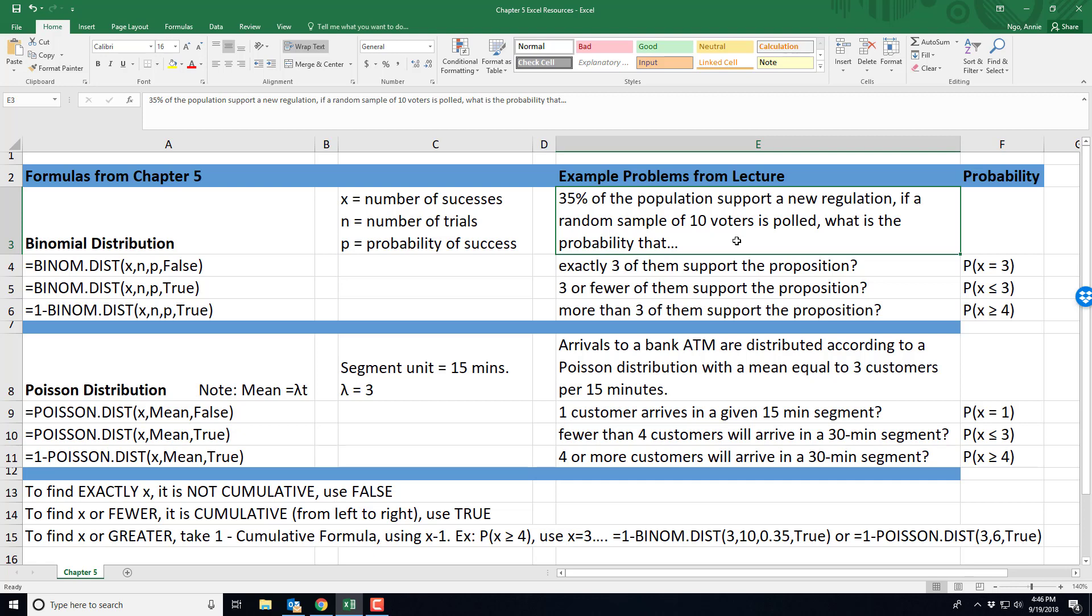And if a random sample of 10 voters is polled, what is the probability for a particular event? And we have three possible events here that we get to practice our binomial distribution with.